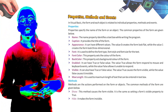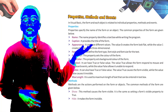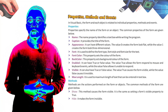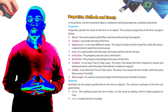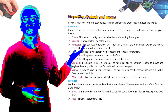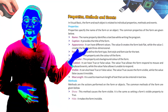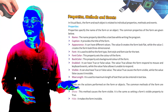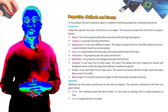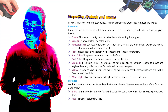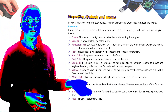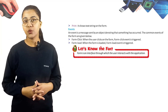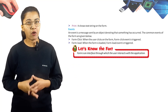Now let's learn about methods of the form. Methods are the actions performed on the form or object. Common methods include: Show — causes the form to be visible, the same as setting the form's Visible property to True; Hide — makes the form invisible; and Print — shows a text string on the form.